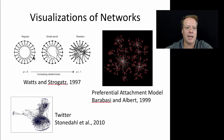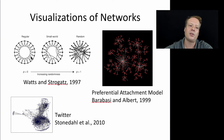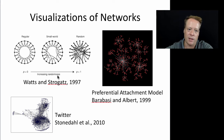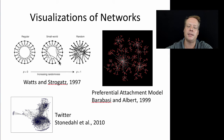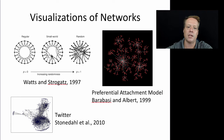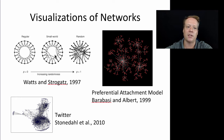On one side we have a regular network, and on the other side a random network. What Watts-Strogatz showed was that if you start with a regular network and randomly rewire some of the nodes — rewiring zero gives you a regular network, rewiring all of them gives you a random network — in between you get a small world network where most people are connected to their nearby friends but some have long-range connections. This small world network gives you many properties we see in real-world social networks, including the famous six degrees of separation.